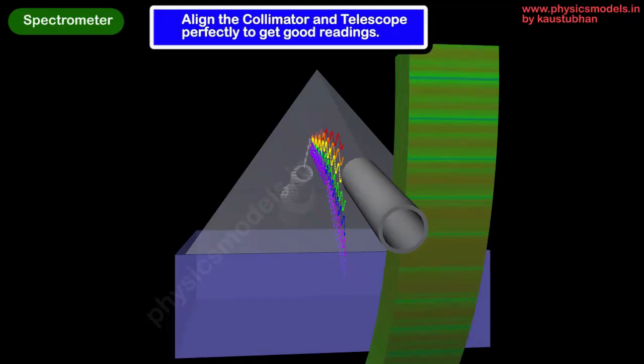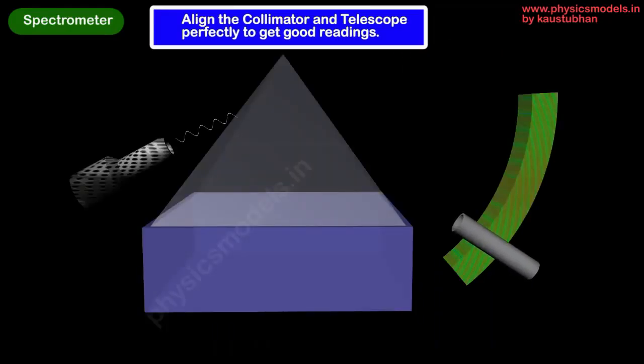If the prism had a different angle, then the refraction angle will be different. By noting down the angle at which we move the telescope, we can make deductions about the prism itself.